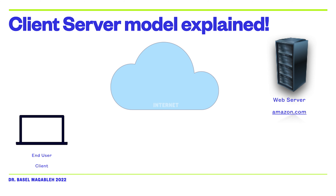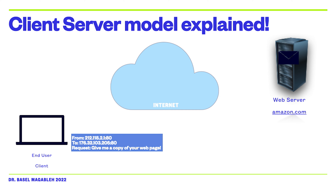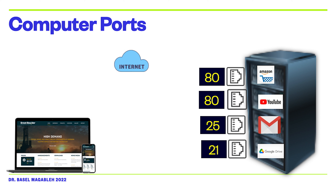For example, an end user wants to access Amazon.com. In this case, the client sends a request to the web server requesting a copy of the main page. Then the Amazon.com web server receives the request and sends the client a copy of the main website. In this example, we have one client requesting one type of content, which is web content.